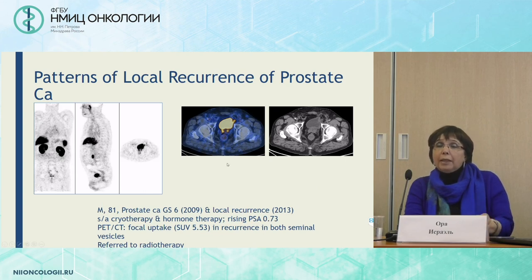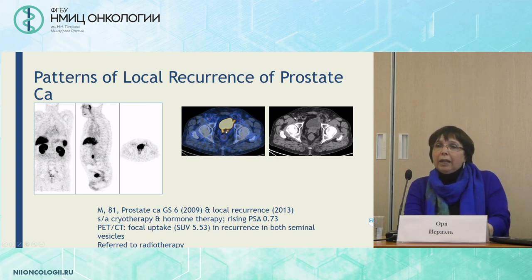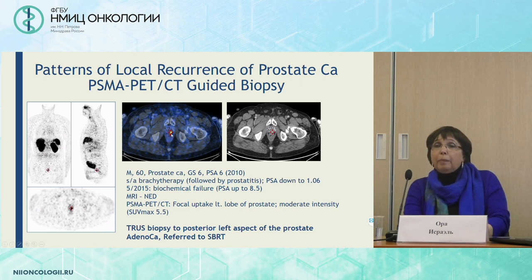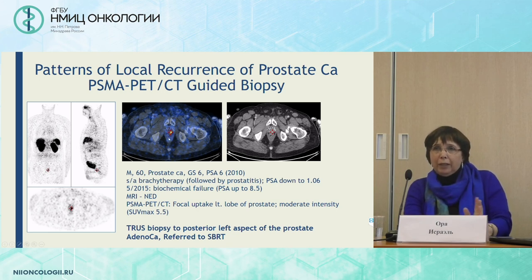When we deal with local recurrence of prostate cancer, we can see here one example of uptake in a recurrence involving both seminal vesicles — this was not known prior, and based on this study, the patient was referred to radiotherapy. This is another patient where we see this area of faint uptake in an area previously treated with brachytherapy. The uptake was not of very high intensity. We referred the patient first to biopsy, following which the final diagnosis led to referral again to radiotherapy.